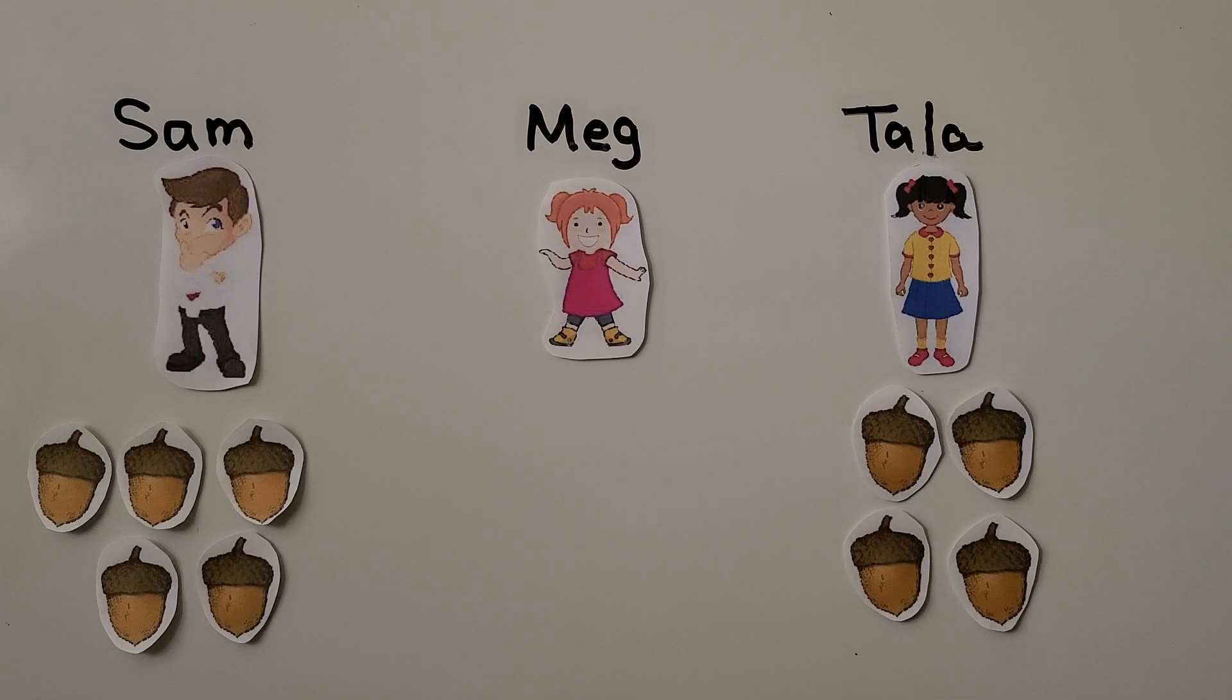Sometimes in problems there will be information that is extra that we don't need. We didn't need to know how many Meg had. It wasn't asking about Meg or telling us to find anything about Meg. It told us that Tala found 1 less than Sam. How many did Tala have? We took 1 away from what Sam found, and we found Tala had 4.